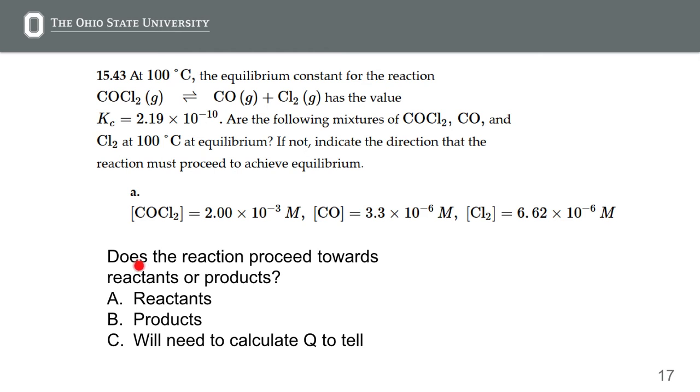If we then look at this multiple choice question, does the reaction proceed towards reactants or products? I don't know why I even included this multiple choice. I should have erased it, but basically we need to calculate Q in order to determine if we need more reactants or more products, assuming we're not at equilibrium. In order to figure out if we're at equilibrium, what do we do? Calculate Q, right? Then we're going to compare Q, the value that we get for Q, to the value of K, and determine if we need to form more reactants or more products.